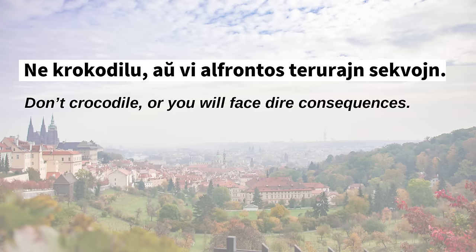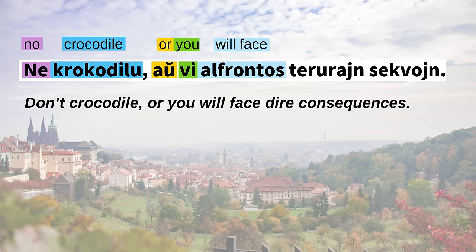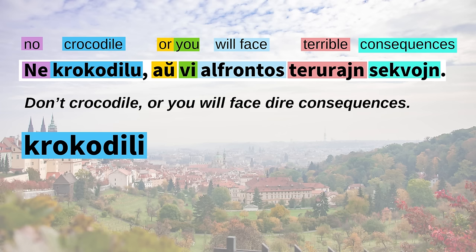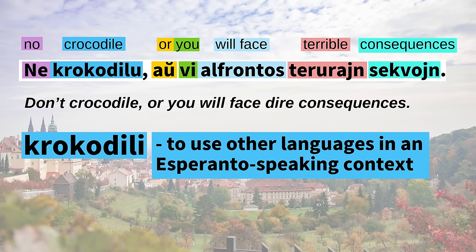"Ne krokodilu" — don't crocodile, or you will face dire consequences. What does crocodile mean? It's a verb used by Esperanto speakers to refer to the use of other languages in an Esperanto-speaking context. For example, if you join an Esperanto meetup but walk around speaking English — or even worse, French — then the other attendees might just snap. Esperanto speakers believe in global harmony, peace, and tolerance... unless you crocodile. Then you better run for your life.